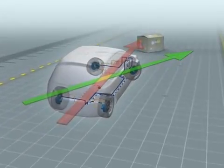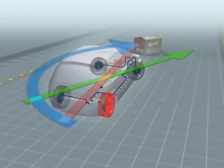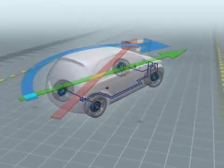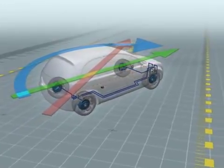In split seconds, ESP brakes the right rear wheel very briefly and sharply. This produces the desired counteracting force so that the car responds as the driver intended.